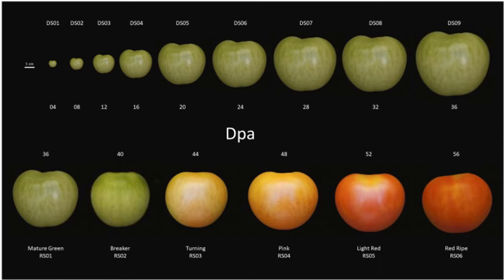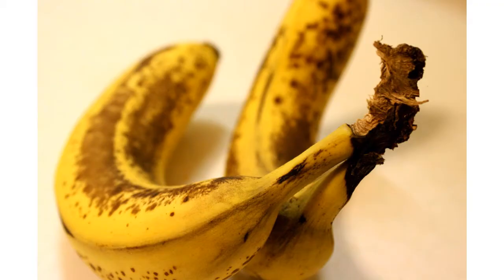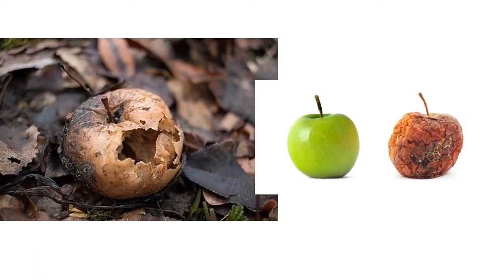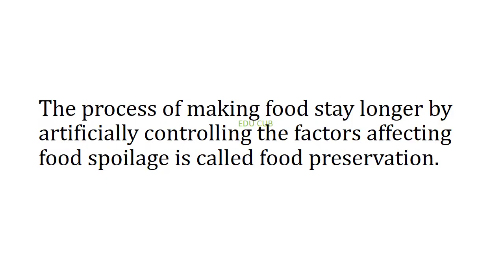Different methods are used to preserve food, and this will help to fulfill the nutrient requirements of humans. Let's see some examples of self-degradation: maturation of banana and ripening of apple.